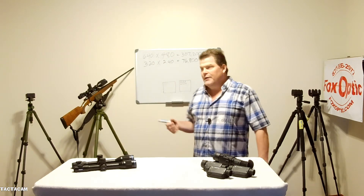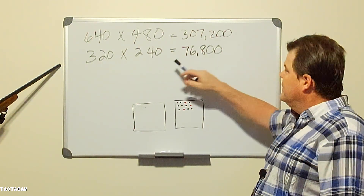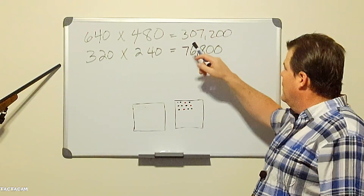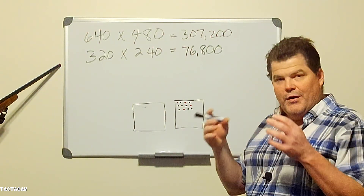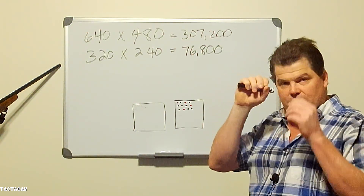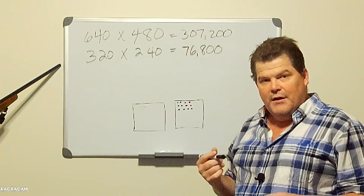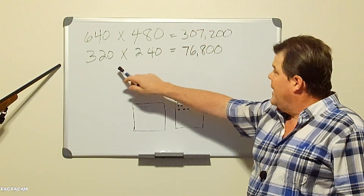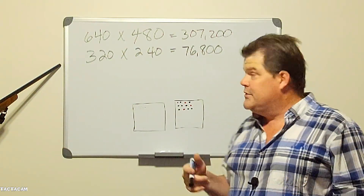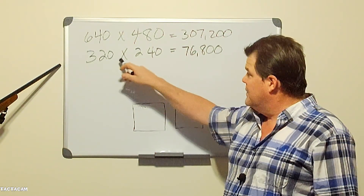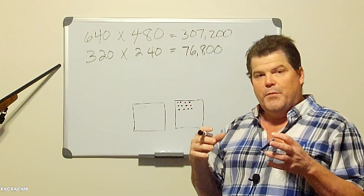Let's jump over to the board. What I'm going to show you here are two really common sensor sizes. In the case of 640x480, you're going to have about 307,200 what they call simcells — those are the little sensors on the front end of the camera sensor itself, measuring the light waves coming through the lens. In the case of 320x240, that number is going to be significantly less.